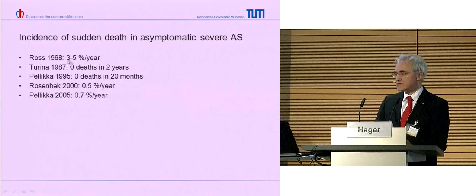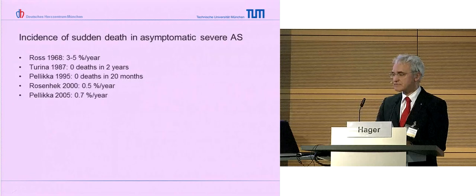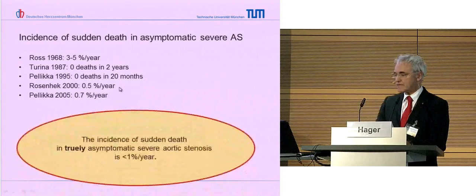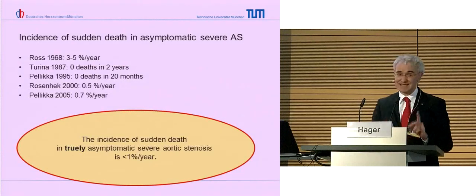They saw a 3 to 5% per year incidence of sudden cardiac death. Later on, when they had access to echocardiography, they found a much lower rate of this incidence. To summarize: the incidence of sudden cardiac death in truly asymptomatic, severe aortic stenosis is less than 1% per year.